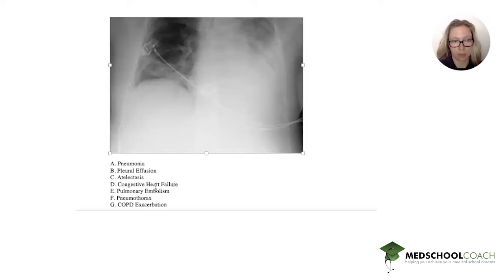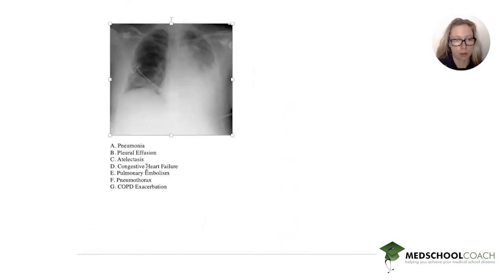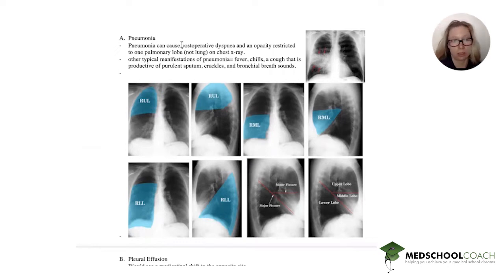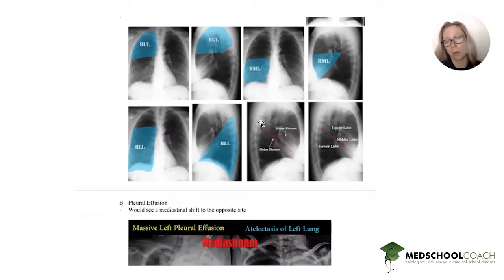Let's go over the answer choices. Answer number one is pneumonia. Pneumonia can cause post-op dyspnea, and you'd have an opacity restricted to one pulmonary lobe with very clear borders. You would also see signs of pneumonia: fever, chills, a cough with purulent sputum, and bronchial breath sounds. Pneumonia is quite classically confined to fissures, so it won't cross fissures.